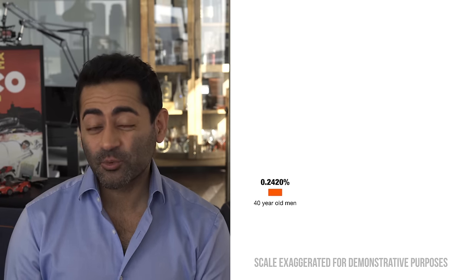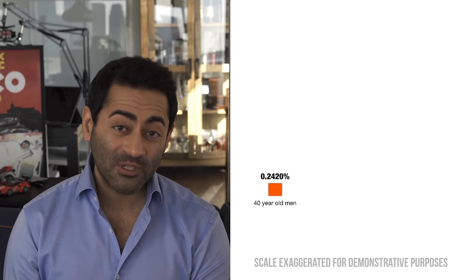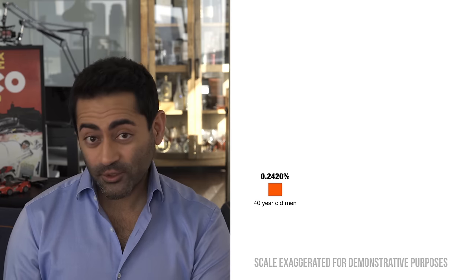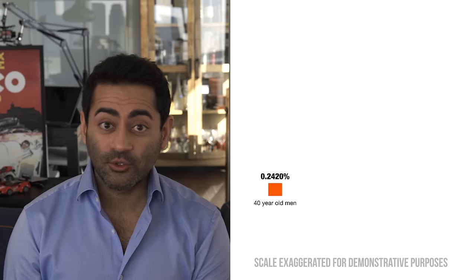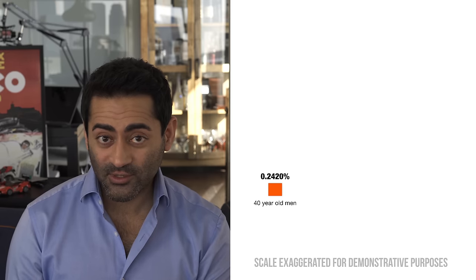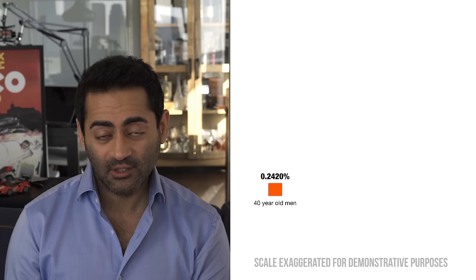Looking at the United States in 2016, the odds of a 40-year-old man dying within the next year were 0.242%, which means for 40-year-old men, 2.42 out of 1,000 would be expected to die in a given year.